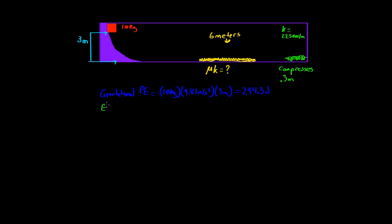So the elastic potential energy, when it is fully compressed, is going to be the equation 0.5 times kx squared. So you're going to take 0.5 times the spring constant, which is up here, 2250 newtons per meter, times the x, which is what it compresses to, which is 0.3 meters, squared. And when you do that, you're going to be left with 101.25 joules.